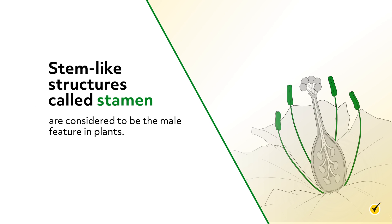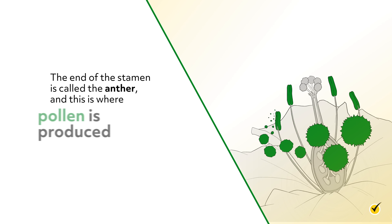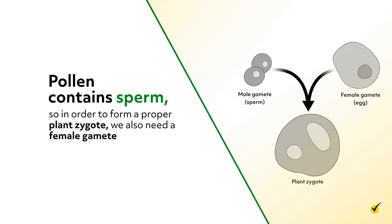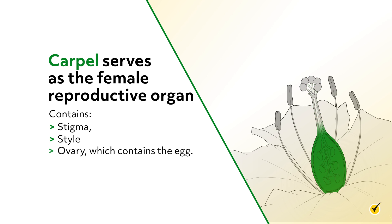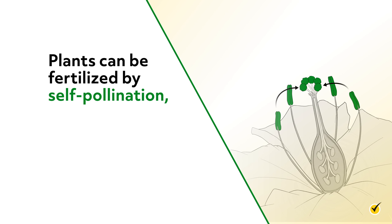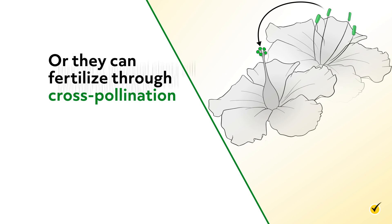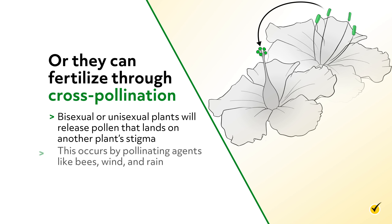Stem-like structures called stamen are considered to be the male feature in plants. The end of the stamen is called the anther, and this is where pollen is produced. Pollen contains sperm, so in order to form a proper plant zygote, we also need a female gamete. The carpel serves as the female reproductive organ and contains a stigma, style, and ovary, which contains the egg. Plants can be fertilized by self-pollination, where a bisexual plant will release pollen that lands on its own stigma, or through cross-pollination, where bisexual or unisexual plants will release pollen that lands on another plant's stigma. This occurs by pollinating agents like bees, wind, and rain.